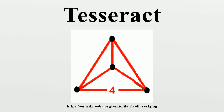It is possible to project tesseracts into three- or two-dimensional spaces, as projecting a cube is possible on a two-dimensional space. Projections on the 2D plane become more instructive by rearranging the positions of the projected vertices. In this fashion, one can obtain pictures that no longer reflect the spatial relationships within the tesseract, but which illustrate the connection structure of the vertices. A tesseract is in principle obtained by combining two cubes, similar to the construction of a cube from two squares. Each edge of a tesseract is of the same length. This view is of interest when using tesseracts as the basis for a network topology to link multiple processes in parallel computing. The distance between two nodes is at most four and there are many different paths to allow weight balancing.